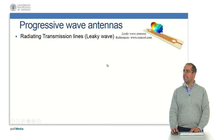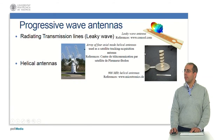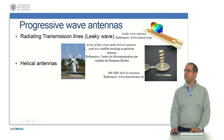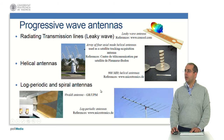Then we have progressive wave antennas. For example, here a radiating transmission line called leaky wave antennas — this is a traveling wave antenna. Then helical antennas; here for example an array of four axial mode helical antennas used as a satellite tracking acquisition antenna, and here a 900 megahertz helical antenna. Log periodic and spiral antennas — here an example of Vivaldi antennas, and here the typical log periodic antenna.